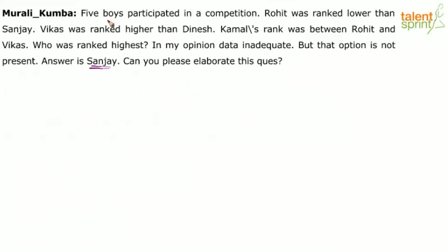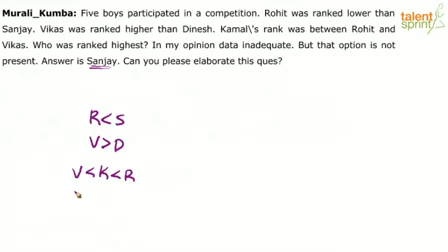Because 5 boys participated in the competition: Rohit was ranked lower than Sanjay, Vikas was ranked higher than Dinesh, and Kamal's rank is between Rohit and Vikas. Now Kamal between Rohit and Vikas can go both ways — it can be Vikas followed by Kamal followed by Rohit, or Rohit followed by Kamal followed by Vikas.